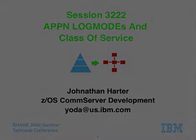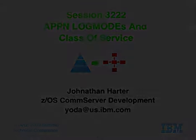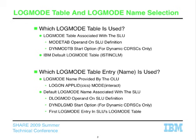Let's talk a little bit about log modes and class of service. The primary way of resolving a log mode name to a class of service is by looking it up in a log mode table. You look up the log mode name in the log mode table, and it has a COS operand that tells you what subarea COS will be used, and an APPN COS operand that tells you what APPN class of service should be used for that log mode name.